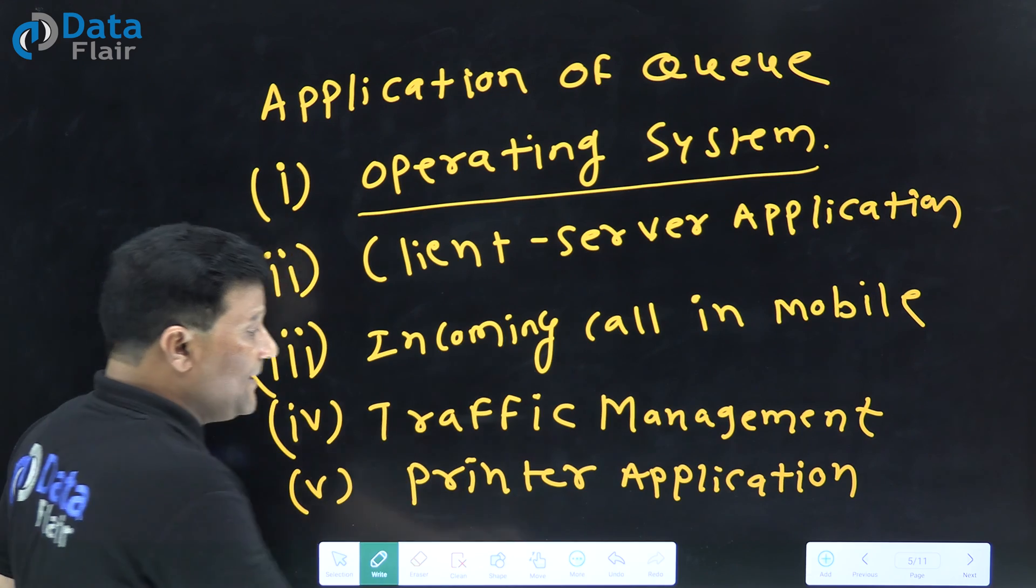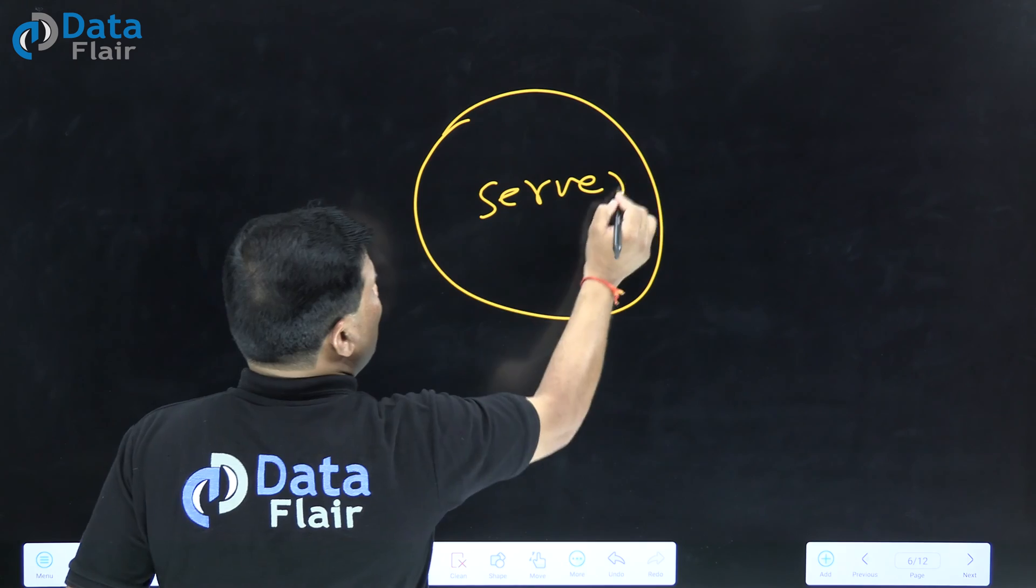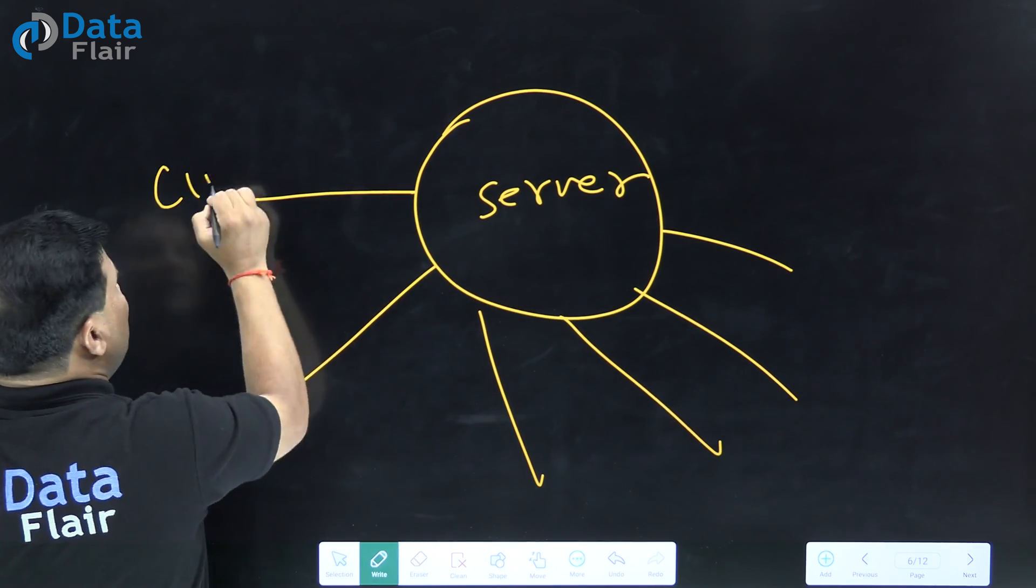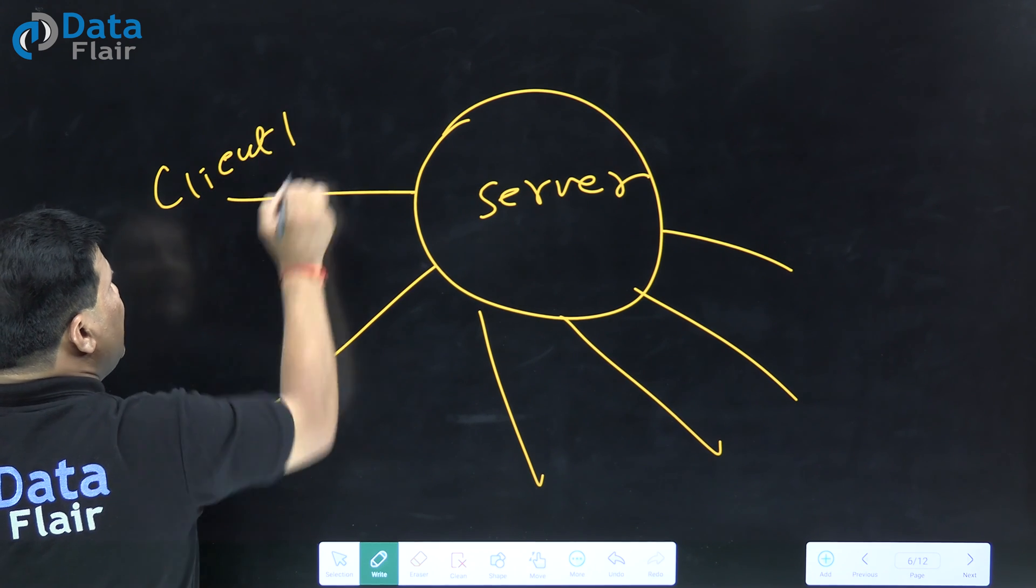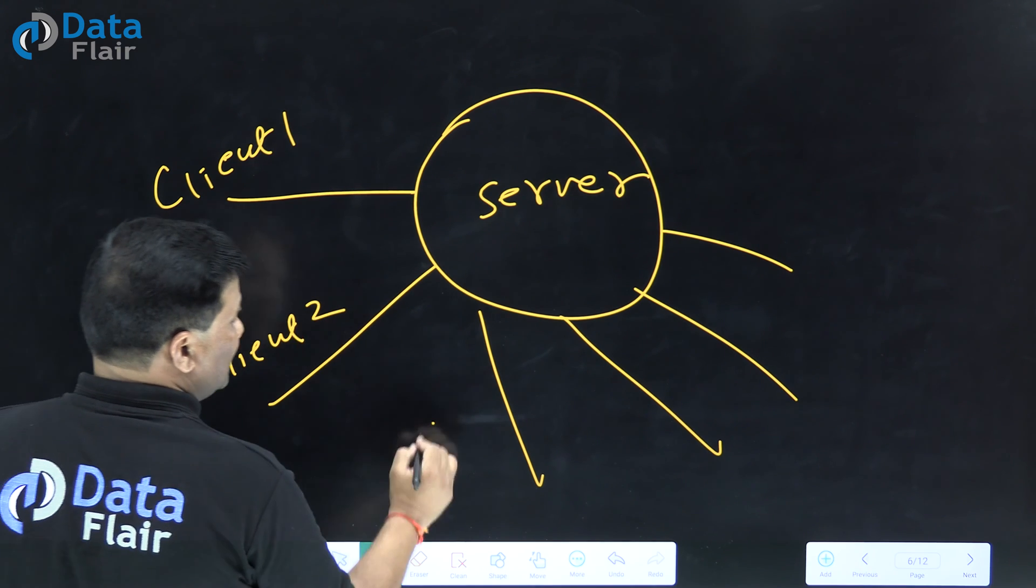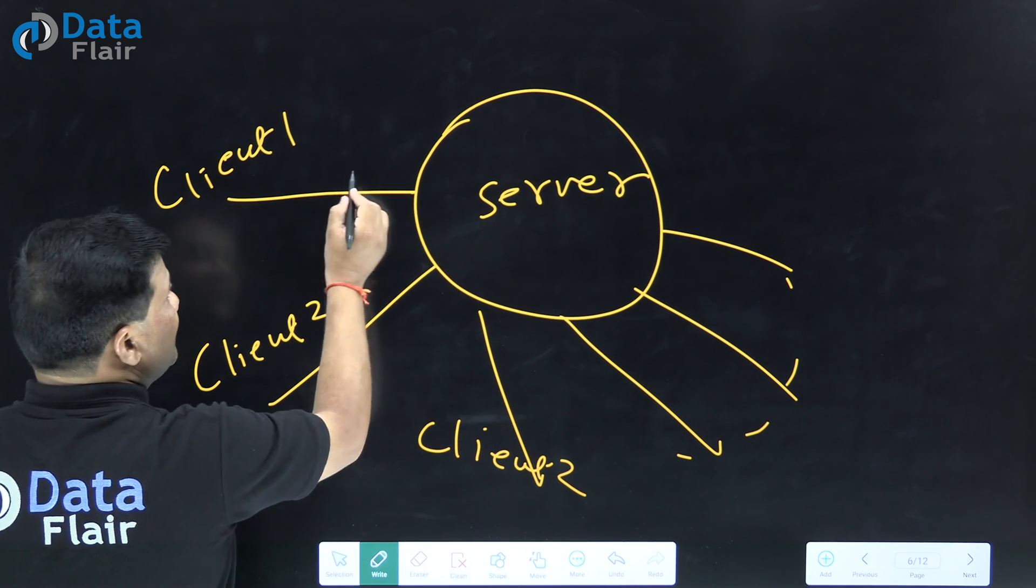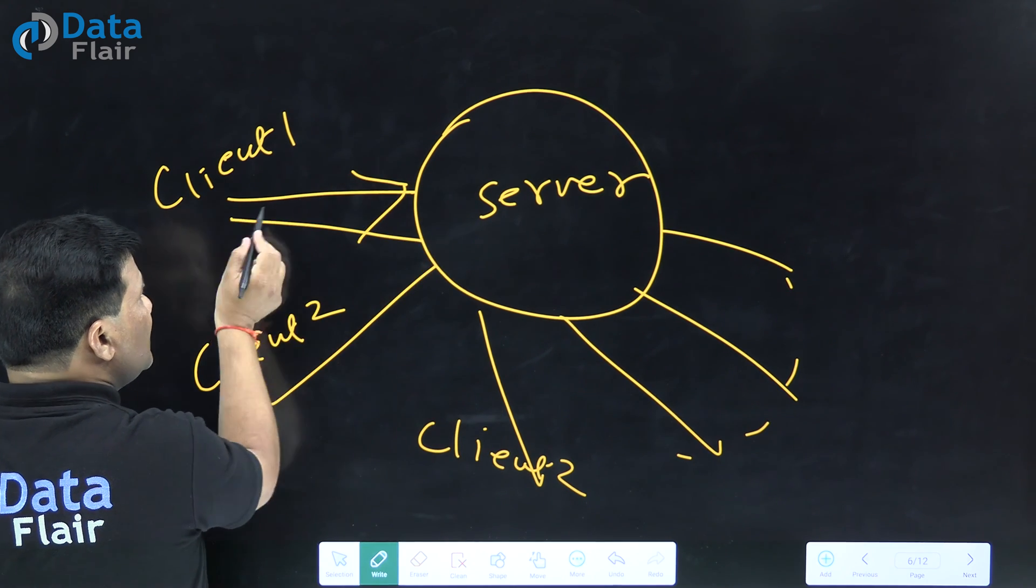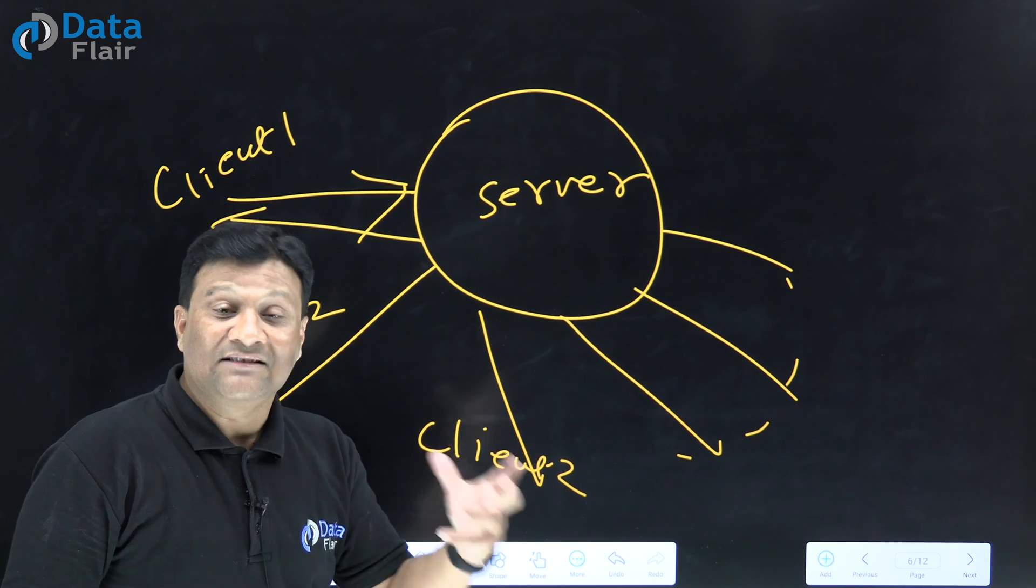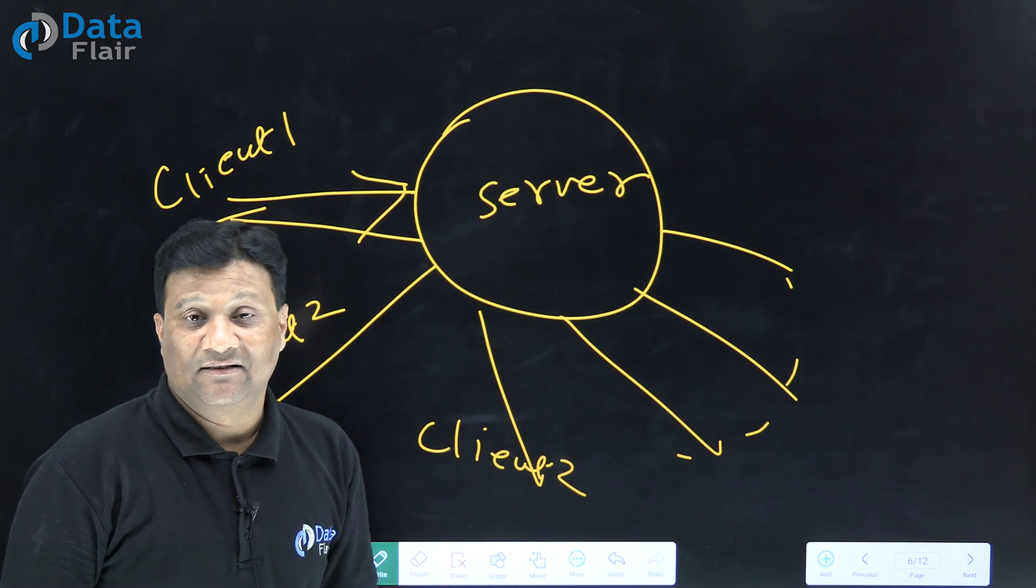That server is always connected to multiple clients. When multiple clients send requests, the client that sends request first will get response first - first-in-first-out. Client-server architecture is an example of Queue implementation in data structure.